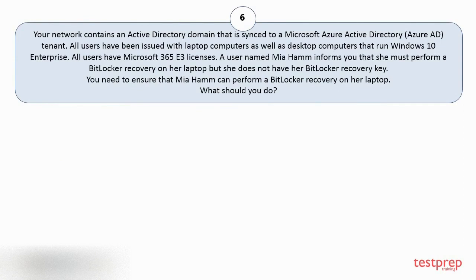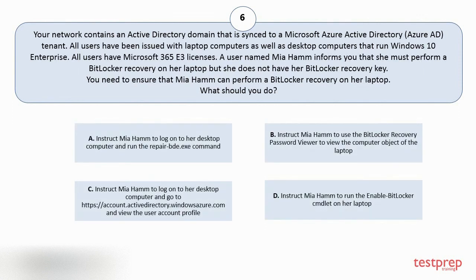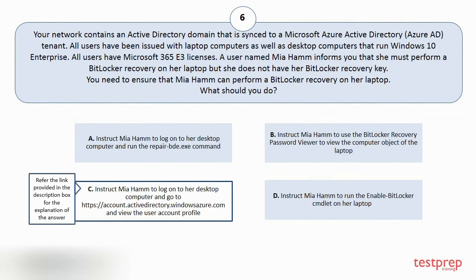Question number six. Your network contains an Active Directory domain that is synced to a Microsoft Azure Active Directory tenant. All users have been issued with laptop computers as well as desktop computers that run Windows 10 Enterprise. All users have Microsoft 365 v3 licenses. A user named Mia Hamm informs you that she must perform a BitLocker recovery on her laptop but she does not have her BitLocker recovery key. You need to ensure that Mia Hamm can perform a BitLocker recovery on her laptop. What should you do? Options: A. Instruct Mia Hamm to log on to her desktop computer and run the repairab.exe command. B. Instruct Mia Hamm to use the BitLocker recovery password viewer to view the computer object of the laptop. C. Instruct Mia Hamm to log on to her desktop computer and view the user account profile. D. Instruct Mia Hamm to run the enable BitLocker command on her laptop. The correct answer is option C.